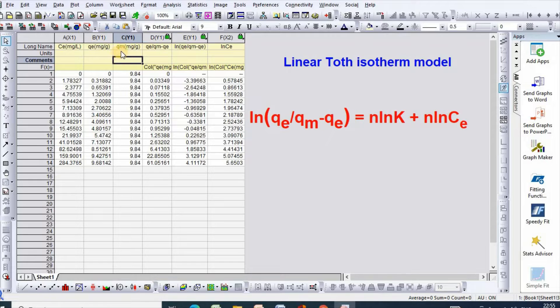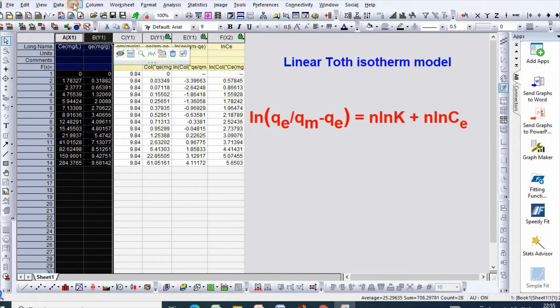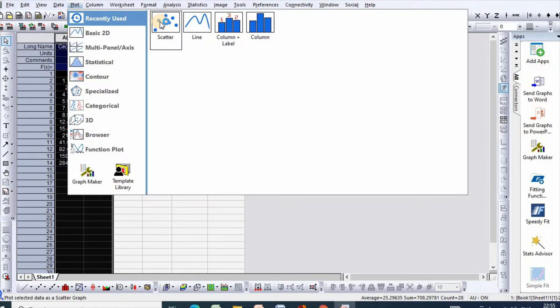So, in order to find out QM, just select this, go to plot, then scatter.